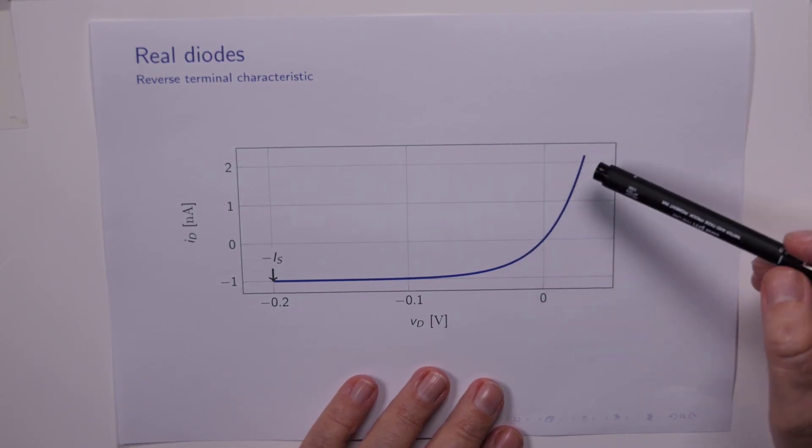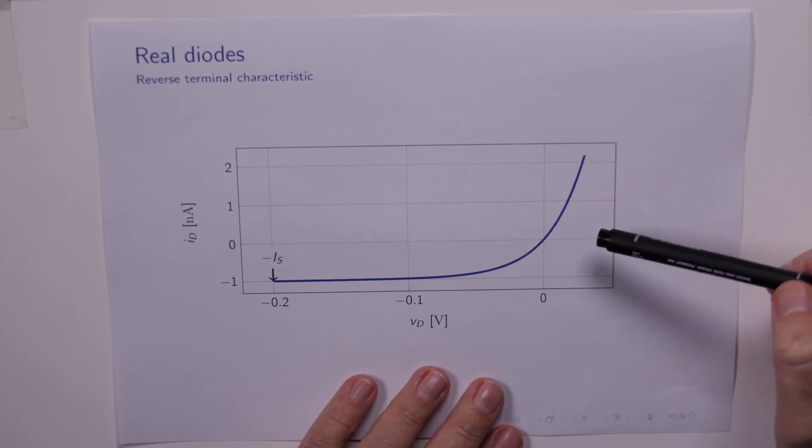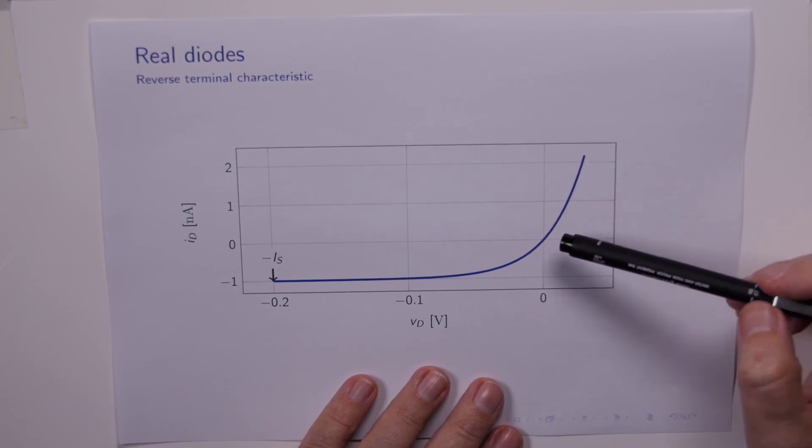So we found two shocking things out about the real diode. One is that it doesn't start conducting until VD is about 0.7 of a volt, and now it actually passes current in the reverse direction.